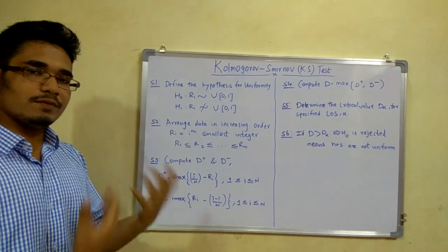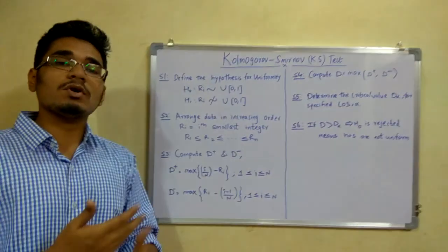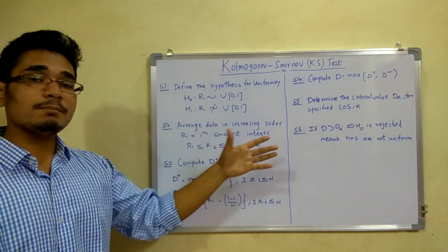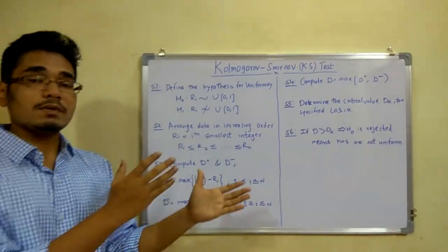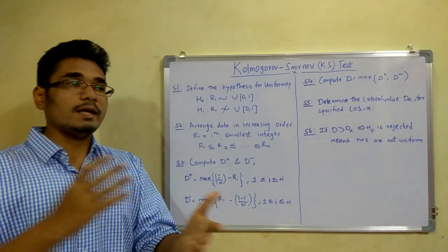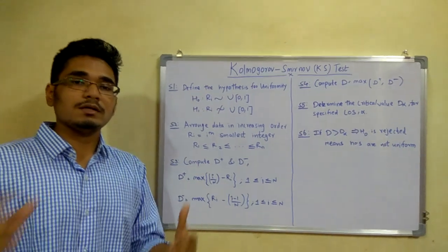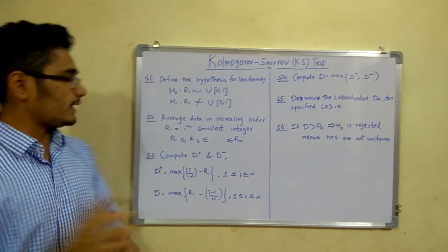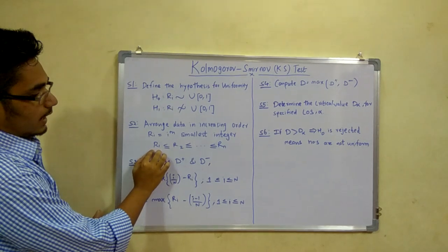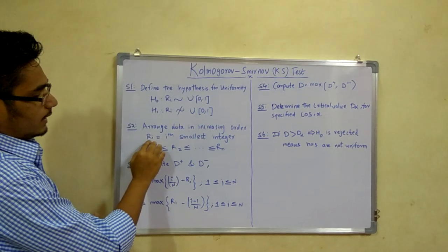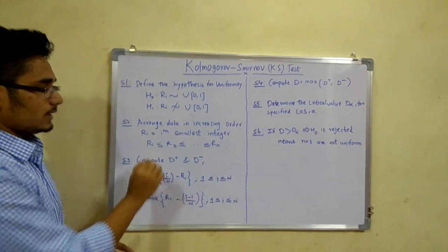The second step is to arrange the given set of numbers, whether 5 or 10 numbers, in increasing order. That is, from smaller to larger numbers in ascending order: 0, 1, 2, and so on. We have R1, R2 up to Rn, where i is the index and Ri represents the ordered random numbers.